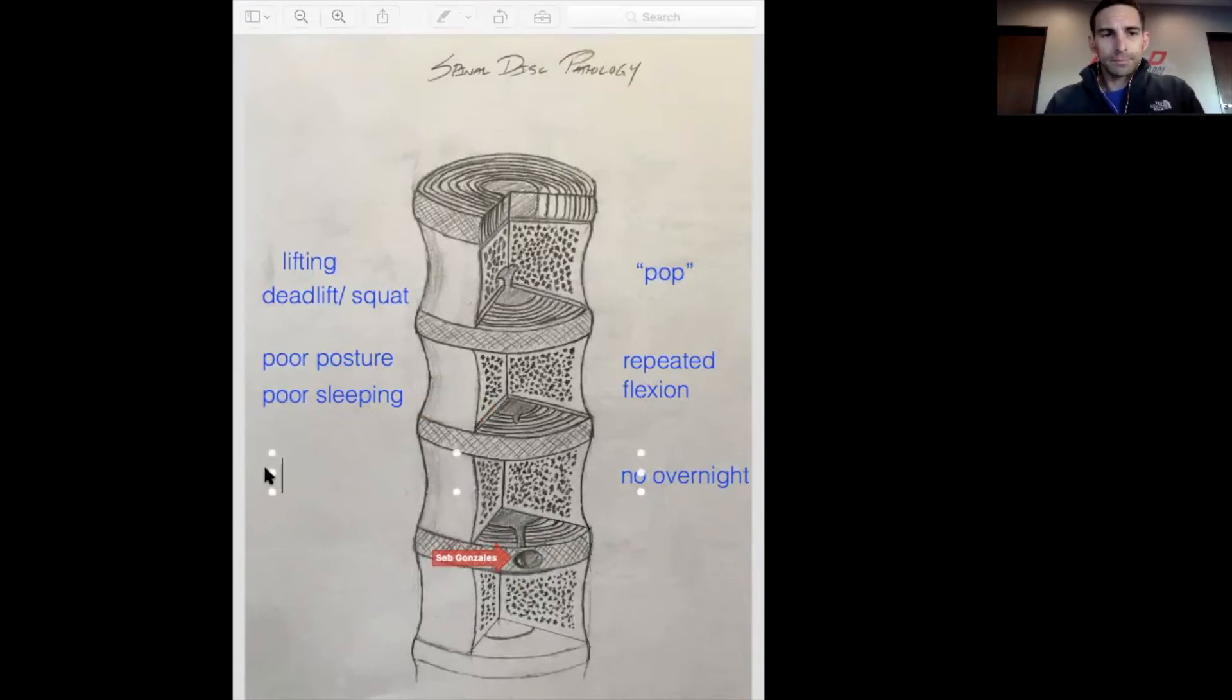These ones, the goal is to, the goal of care is to, we need to centralize the jelly. The goal is to centralize the jelly. If it does not centralize, it's going to keep irritating on stuff out here.